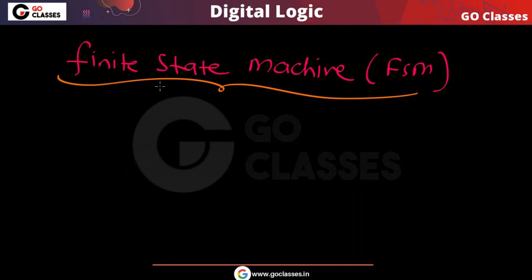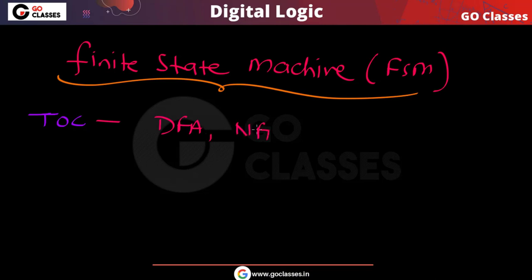In this lecture we will see finite state machine (FSM). You have already seen finite state machine in theory of computation subject - automata theory. In automata theory we study DFA (deterministic finite automata) and NFA (non-deterministic finite automata). These are also finite state machines.